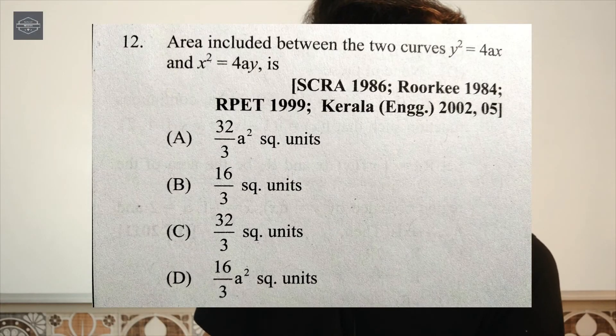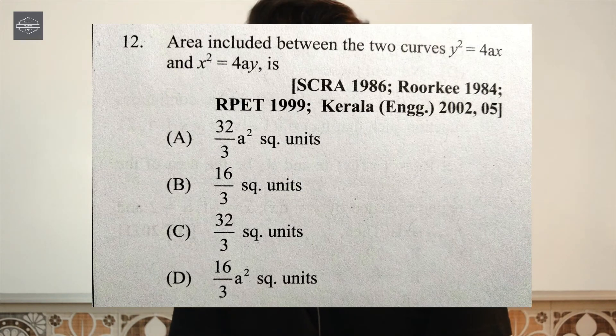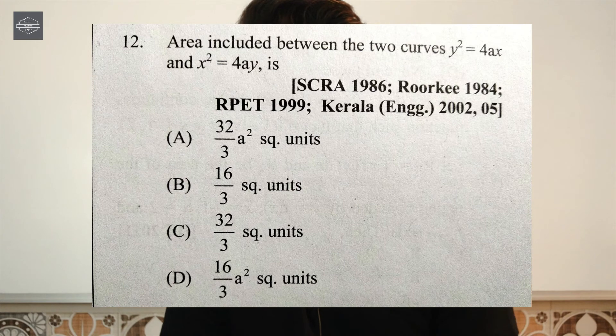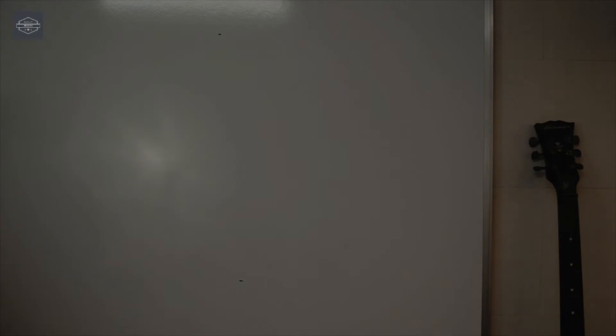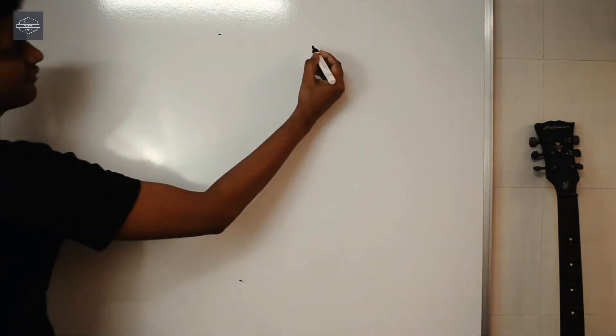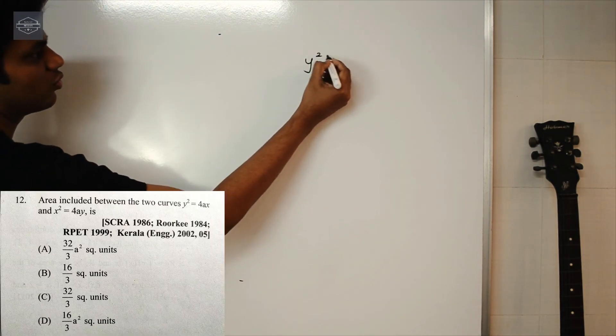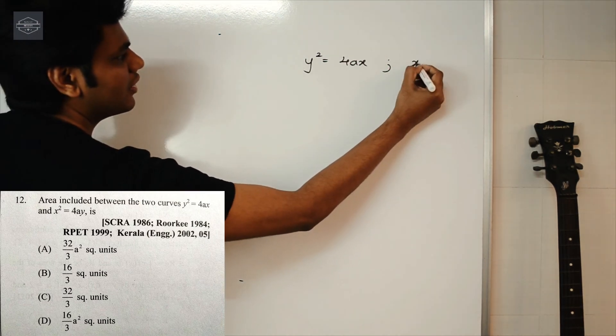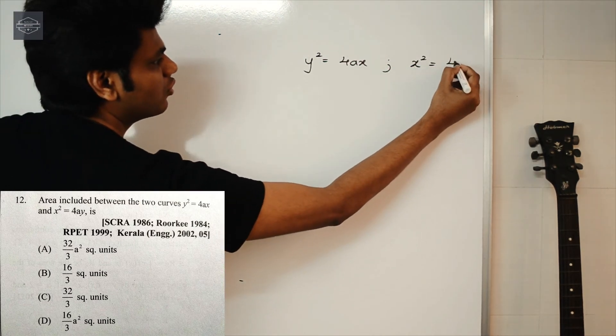The last question is: area included between the two curves y² = 4ax and x² = 4ay. This is a very famous question that has been repeated many times in competitive exams. Let's apply our shortcut. The given equations of parabolas are y² = 4ax and x² = 4ay.